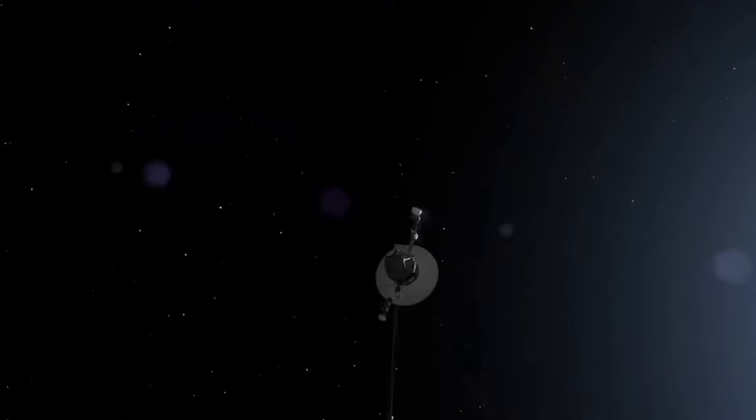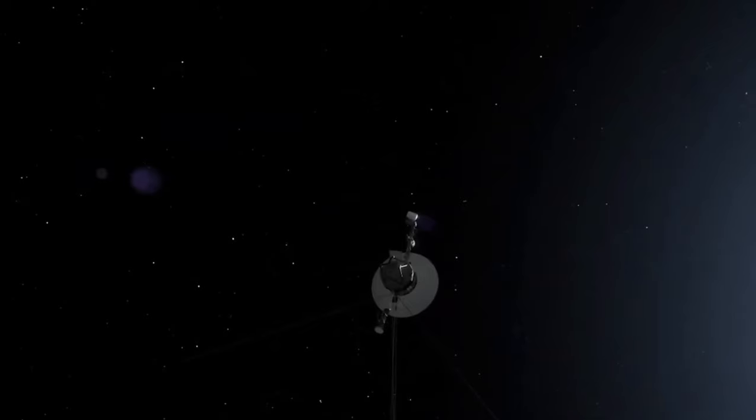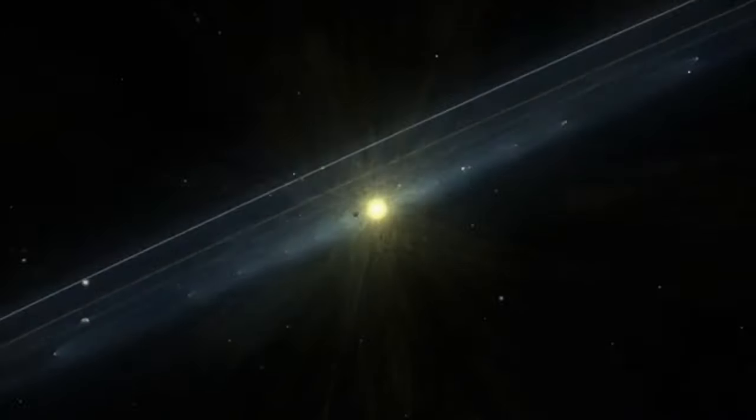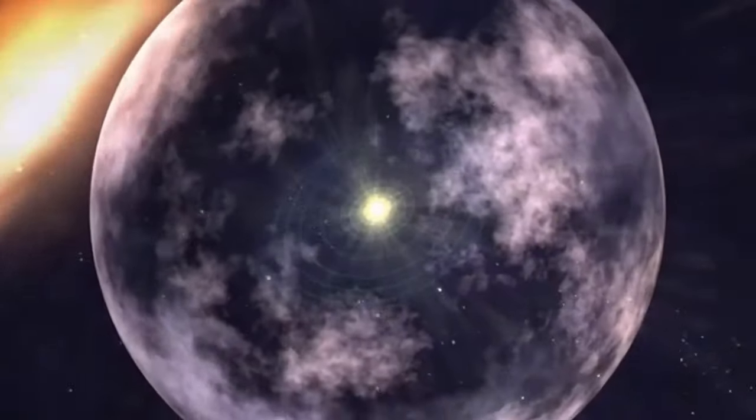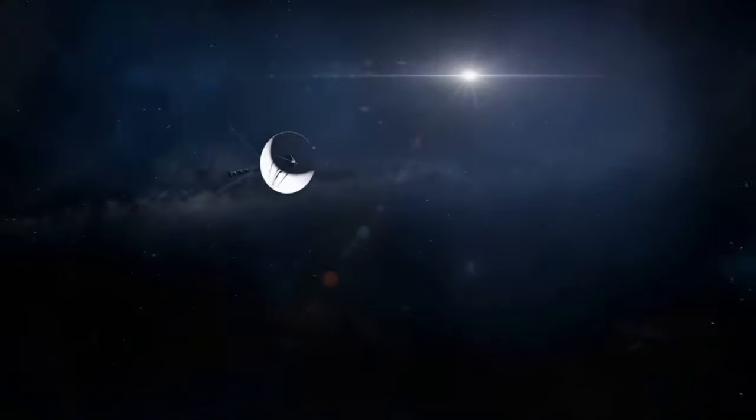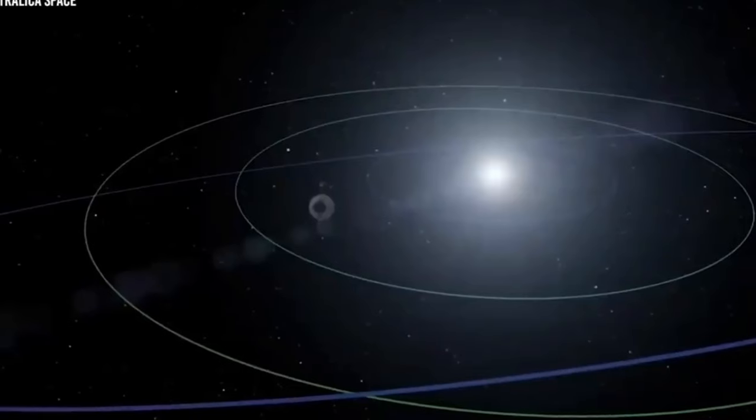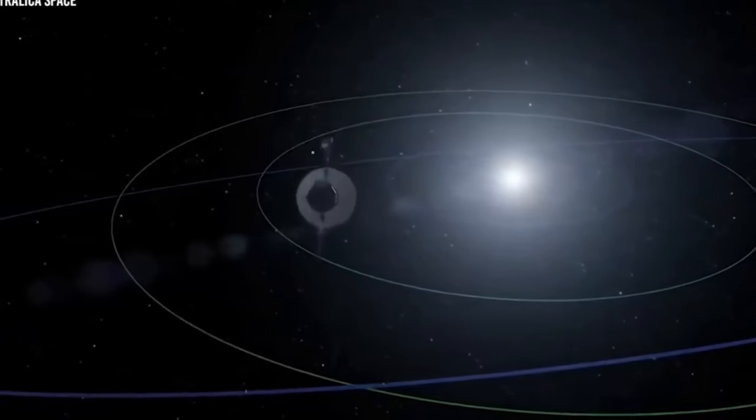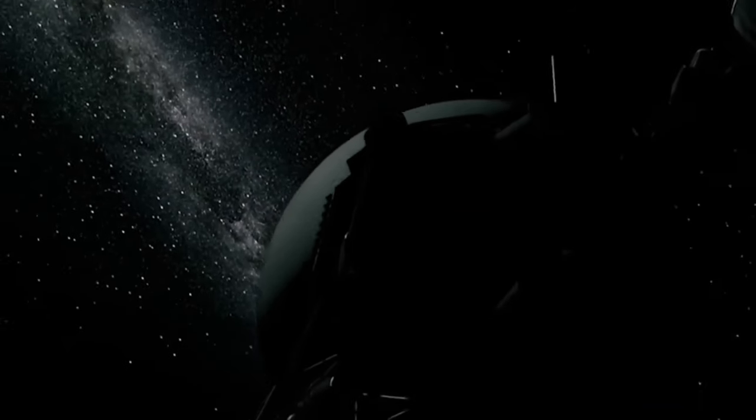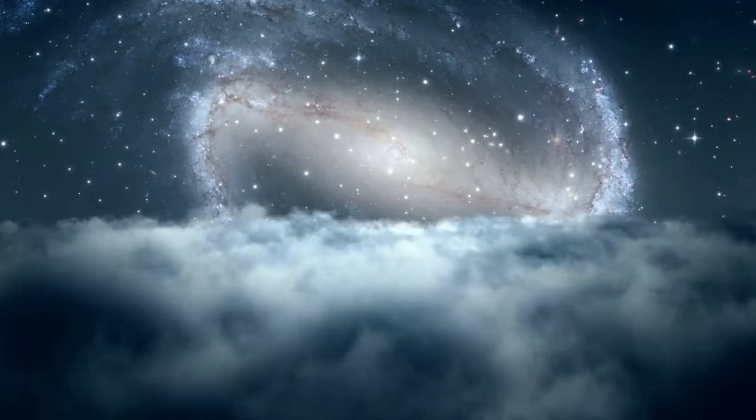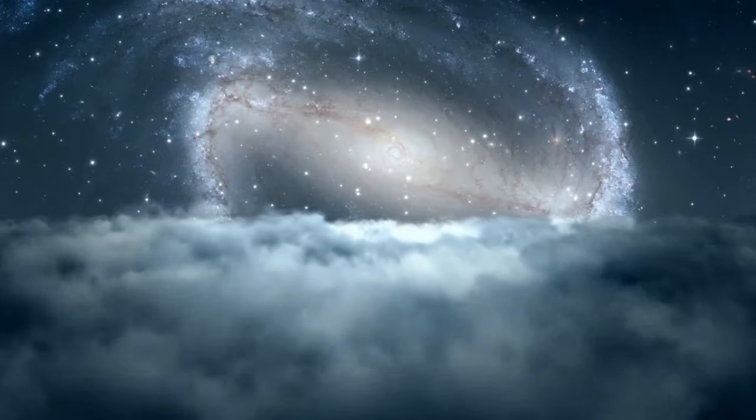It was later discovered that the issue was with Voyager 1's Attitude Articulation and Control System, AACS, tasked with keeping the Voyager's antenna pointed to Earth. This complex piece of machinery helps make the transmission of data correct. However, it turned out a small networking problem had arisen as the AACS was sending telemetry data to the wrong computer. The computer involved in this perplexing turn of events had failed some time ago, and so any data sent in by the AACS got corrupted immediately.